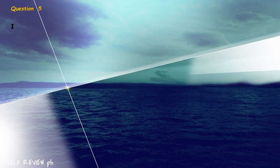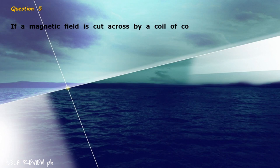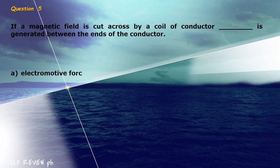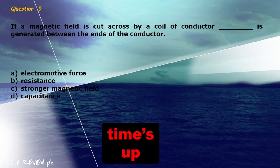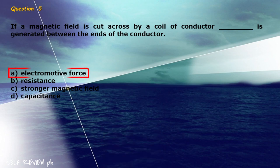Question 5: If a magnetic field is cut across by a coil of conductor, blank is generated between the ends of the conductor. A) electromotive force, B) resistance, C) stronger magnetic field, D) capacitance. The correct answer is letter A, electromotive force.